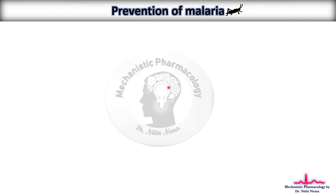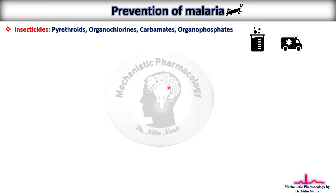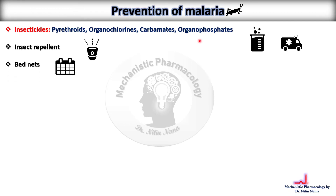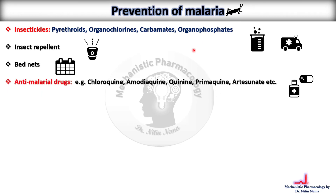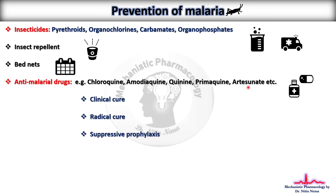Prevention of malaria: it is prevented by the use of insecticides like pyrethroids, organochlorines, carbamates, and organophosphates. We can also use insect repellents and bed nets during sleeping. Anti-malarial drugs such as chloroquine, amodiaquine, quinine, primaquine, artesunate, and a number of other drugs are available, along with some antibiotics such as clindamycin and tetracyclines. Anti-malarial drugs provide either radical cure, clinical cure, or suppressive prophylaxis, which we will learn in lecture number two.